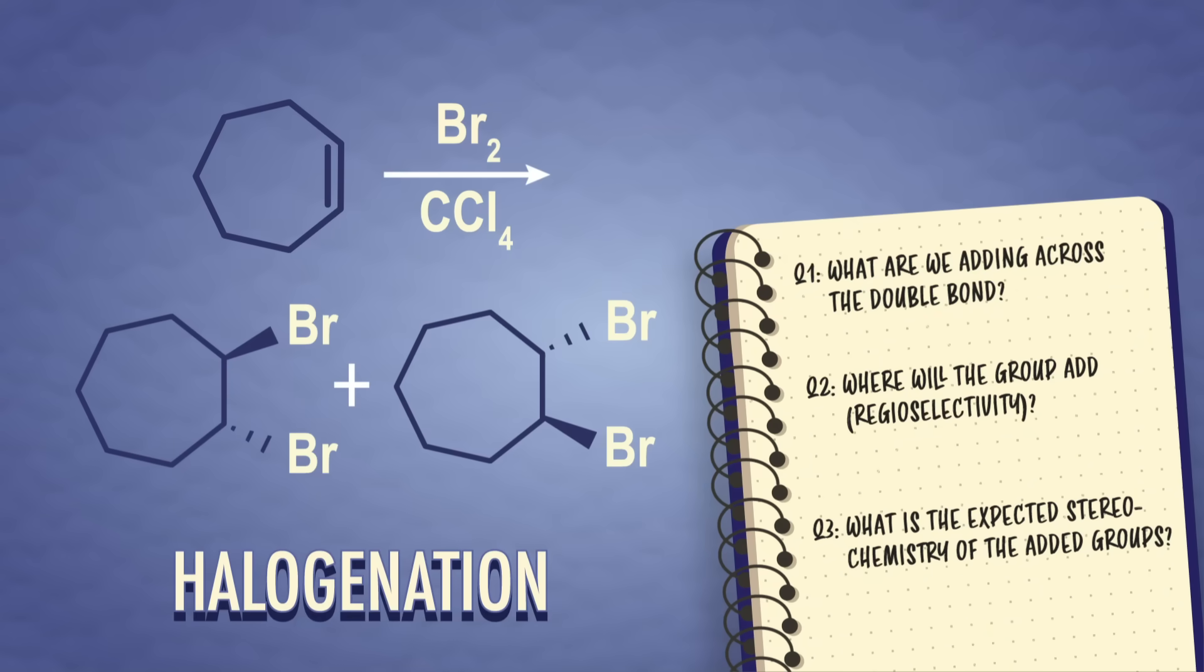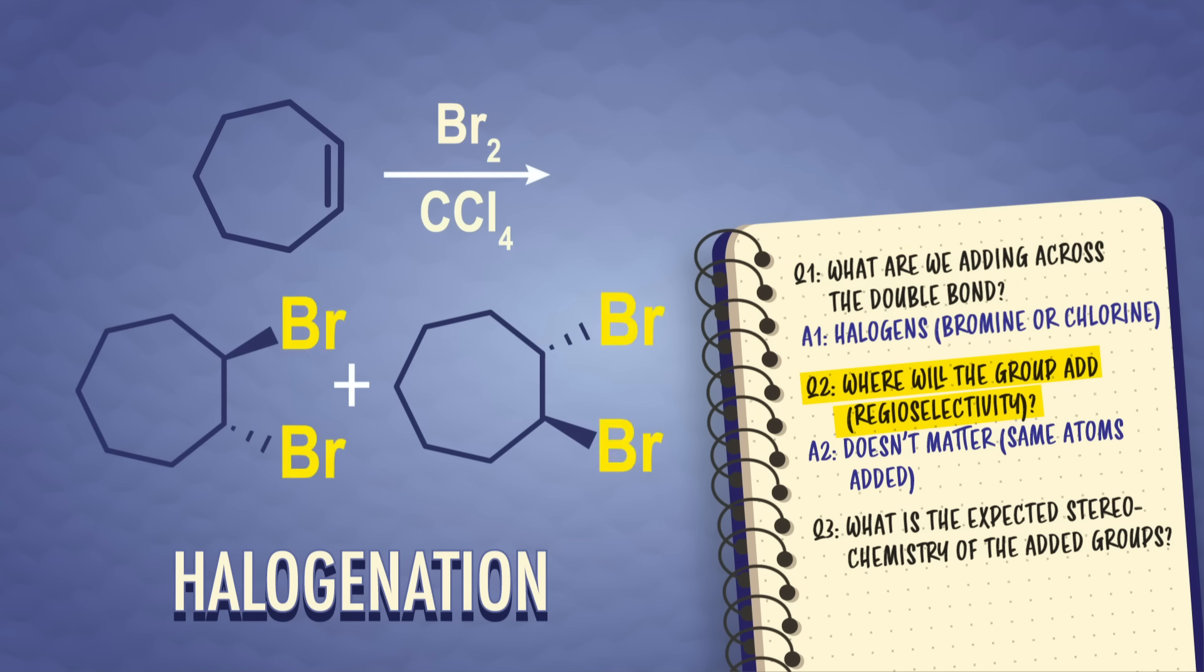Let's start with an addition reaction called halogenation. We're adding chlorine or bromine across the double bond, both of which are in the halogen group of the periodic table. That answers question number one. We typically perform this reaction in a non-nucleophilic solvent like carbon tetrachloride. For question number two, we're adding the same group, a bromine, on both sides. So regioselectivity doesn't matter here.